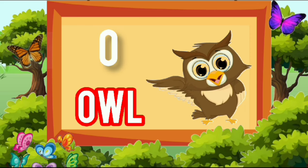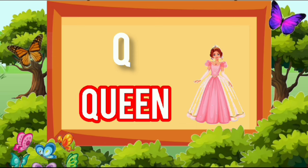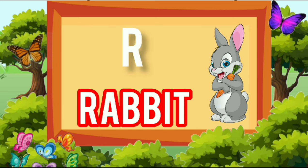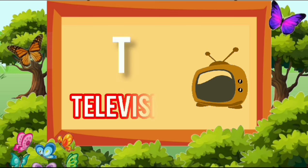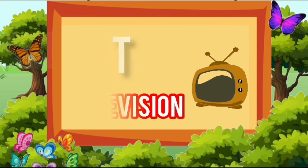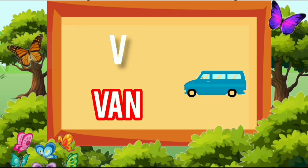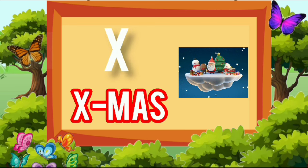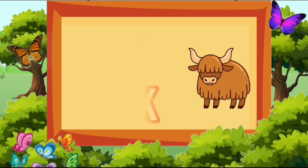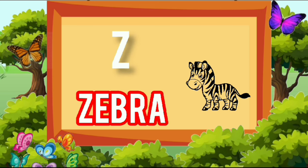O for owl, P for peacock, Q for queen, R for rabbit, S for sheep, T for television, U for umbrella, V for van, W for watch, X for ox, Y for young, Z for zebra.